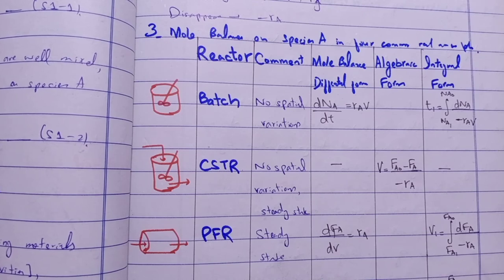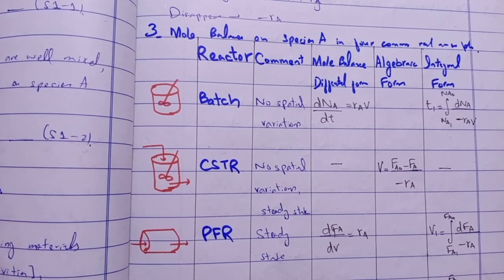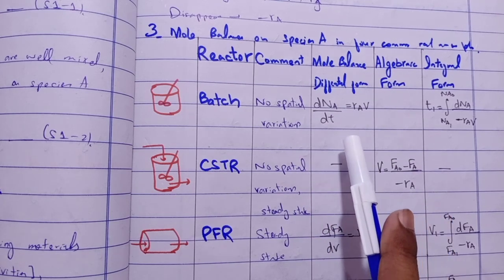Batch reactor: no spatial variations and unsteady state. CSTR: no spatial variation but steady state. You always remind and remember the continuous type reactors are steady state, and batch type reactors are no spatial variation and unsteady state.